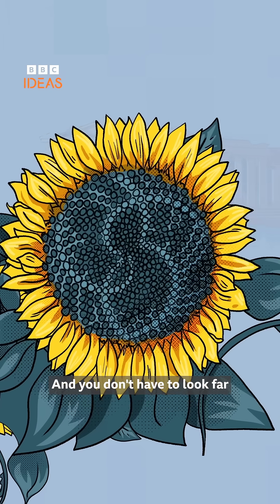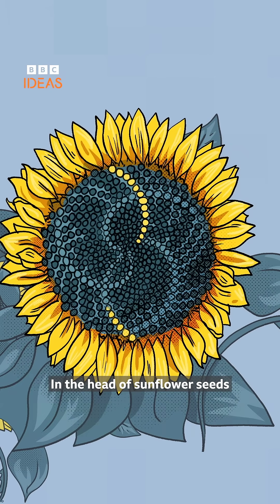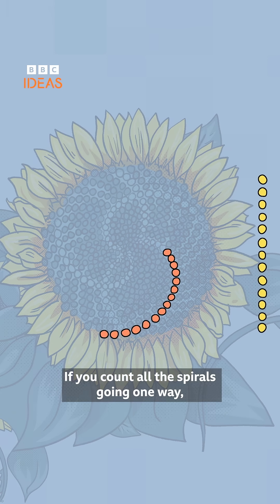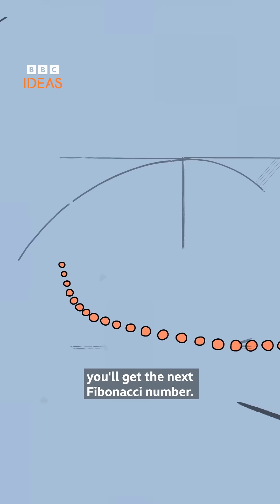And you don't have to look far to see the golden ratio all around us. In a head of sunflower seeds, there are two sets of interlocking spirals. If you count all the spirals going one way, you get one Fibonacci number, and if you count all the spirals going the other way, you'll get the next Fibonacci number.